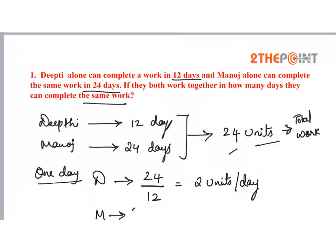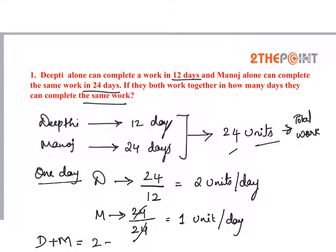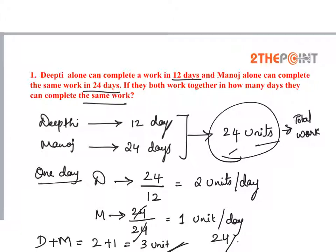And Manoj: 24 is the total work and number of days is 24, so Manoj does 1 unit of work per day. Now if they both work together, the total work completed by them in one day is 3 units. To complete 24 units at 3 units per day, that is 24 by 3, which equals 8. So in 8 days they can complete the total work.